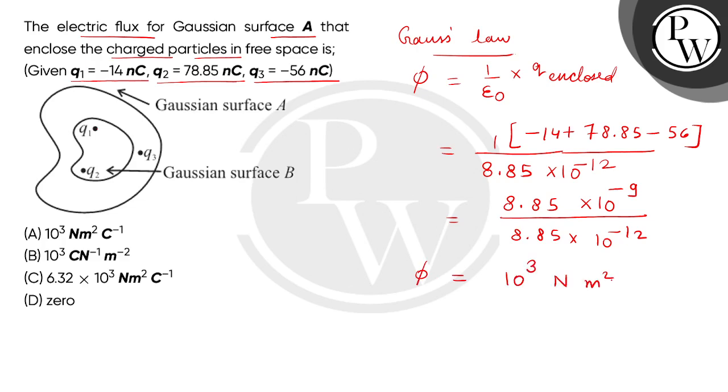Newton meter square per coulomb is the SI unit. So the correct answer is option number A.